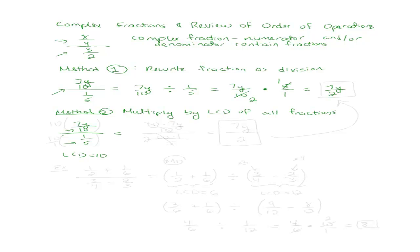10. My LCD is 10. So I'm going to multiply the top fraction and the bottom fraction by the LCD. So I'm going to multiply this one by 10 and this one by 10. So let's see what happens when we do that. When we do that, then the top fraction becomes 10 times 7y over 10, and the bottom fraction becomes 10 times 1 over 5. Let's look at the numerator.